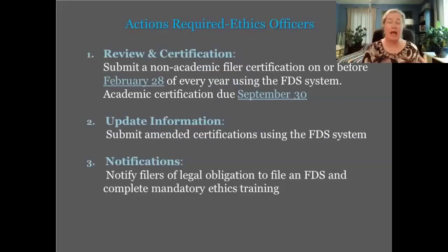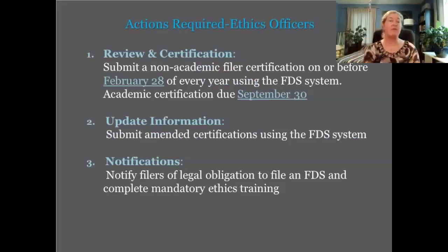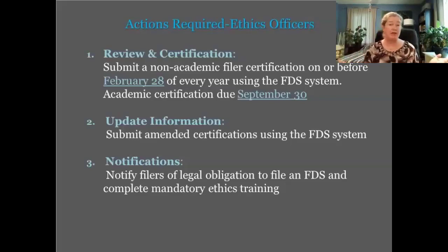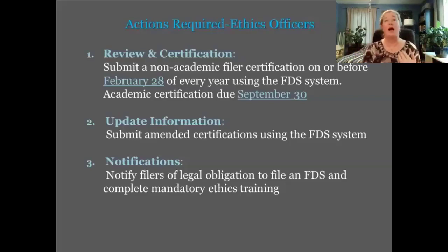One of the most important key actions is certification. Certification contains the name, title, home address, and email address of each individual designated as an FDS filer. Once a year, the agency must submit and certify to JCOPE a list of all active filers within their agency. For non-academic filers, that list must be certified by the end of February; for SUNY and CUNY professors, by September 30th. That list is critical — it's the only way we know who is either a policymaker or a threshold filer.